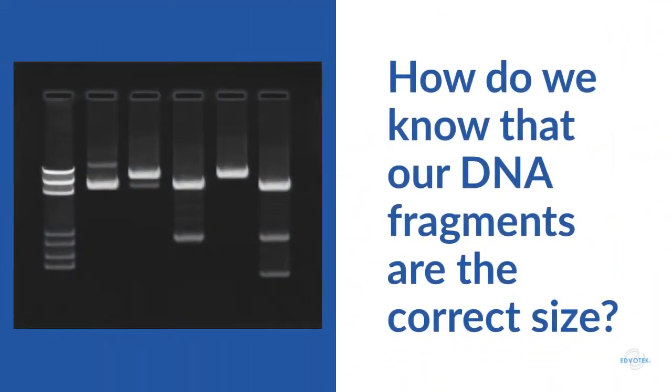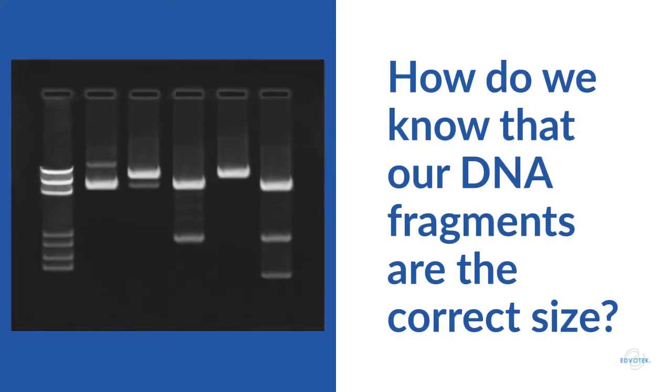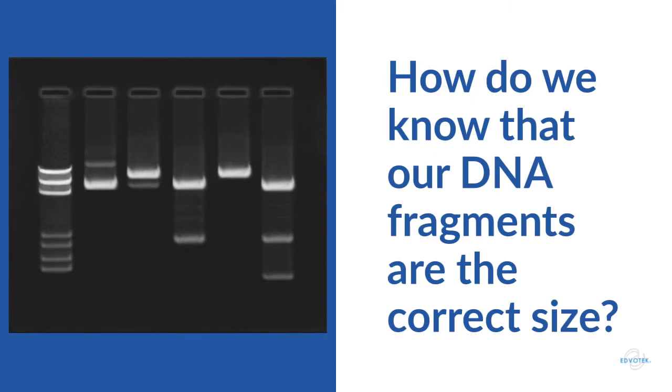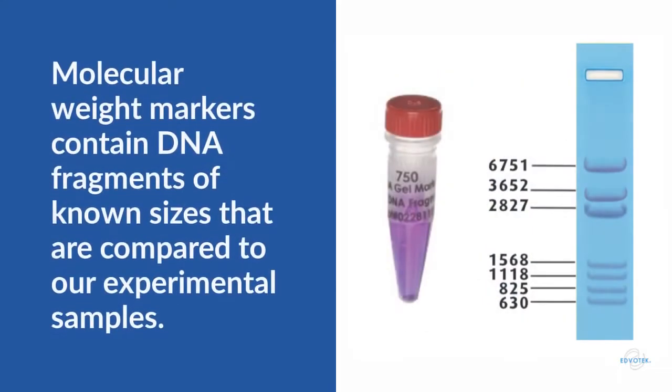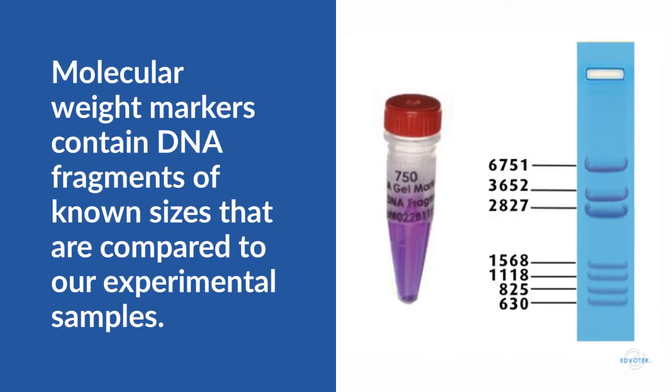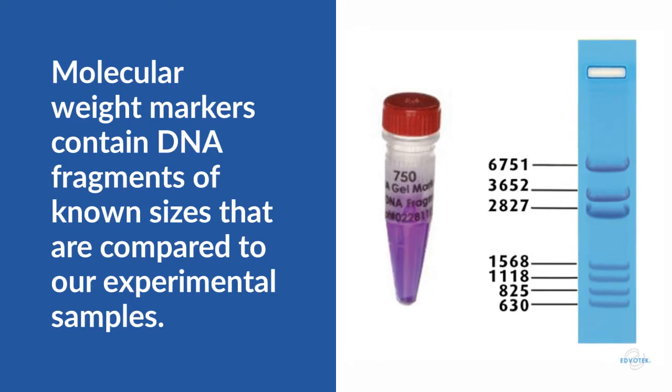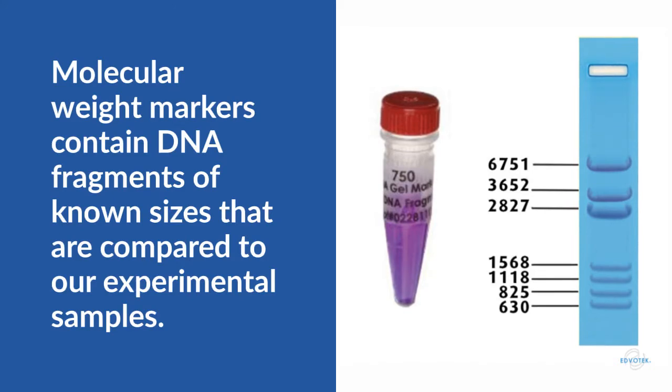But how do you know the size of your DNA fragments after electrophoresis? You use a DNA ladder, which we see in the first lane on this gel. You may have seen this called molecular size marker or standard DNA fragments. Regardless of what you call it, the DNA ladder allows us to determine the size of our experimental DNA fragments after they are separated by electrophoresis. A DNA ladder contains a series of DNA fragments of known molecular weight that we compare to our experimental samples. They are run on the same gel as our experimental bands so that a direct comparison between the two can be made.